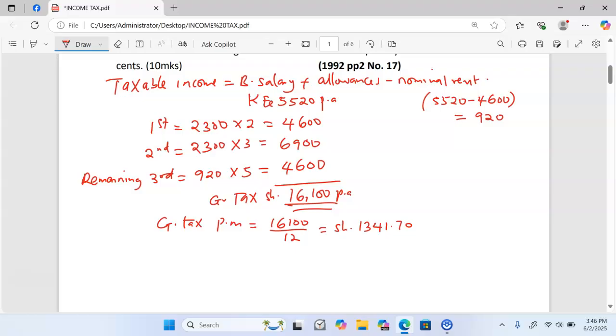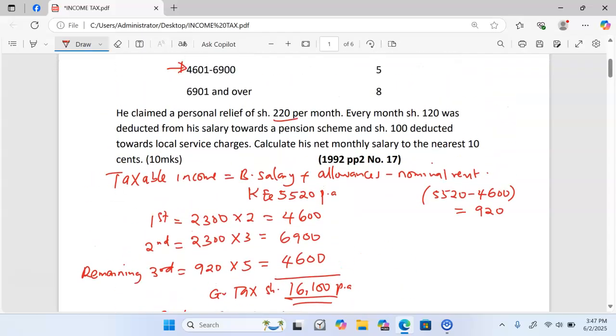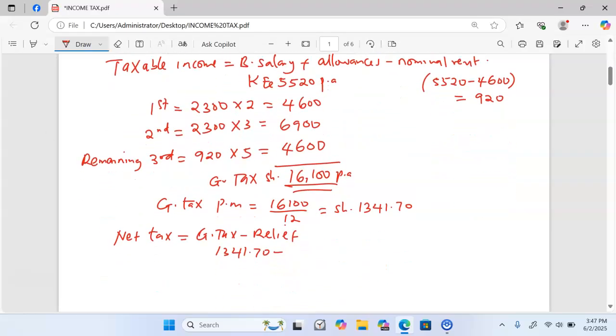Once we have our gross tax, we calculate net tax or tax paid by taking gross tax minus relief. The gross tax of 1,341.70 minus a relief of 220 gives us 1,121.70.